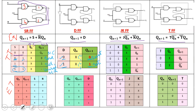Next is JK flip-flop. JK flip-flop is the same as SR flip-flop but with no invalid state. J=0, K=0: no change. J=0, K=1: flip-flop reset. J=1, K=0: flip-flop set. J=1, K=1: toggle — if present state is 0, next state is 1; if present state is 1, next state is 0. That is toggling. This is the JK flip-flop truth table.